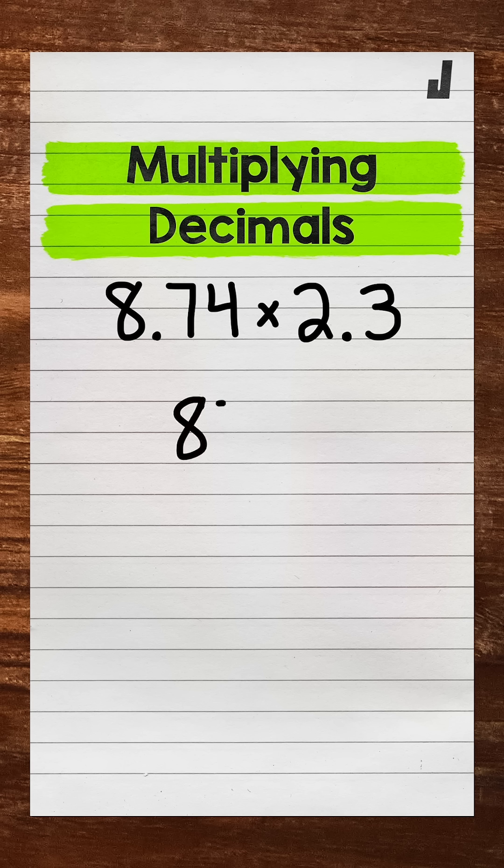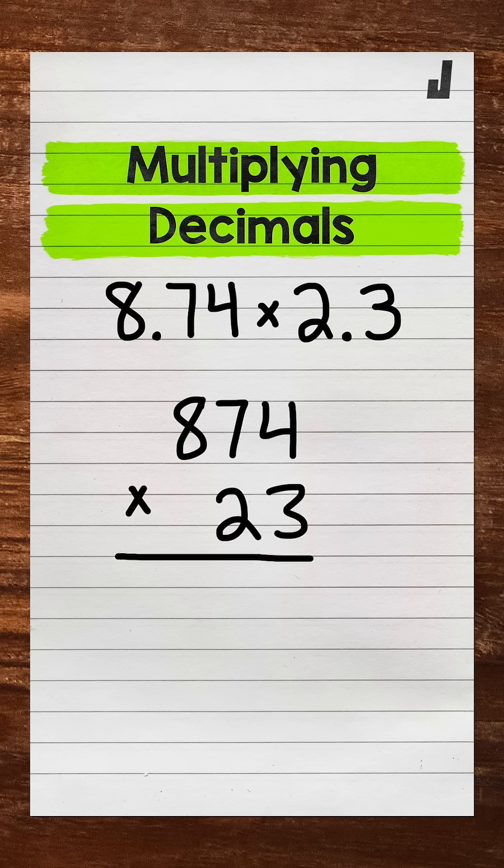So 874 times 23. Now, our second step is to multiply. Let's start with 3 times 4, that's 12.